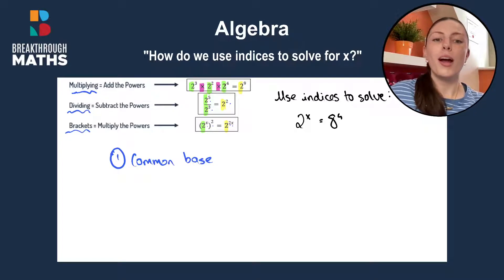Okay, on to our question. We're asked to use indices to solve 2 to the power of x is equal to 8 to the power of 4. First of all, we notice that we do not have a common base. We have 2 and we have 8, so we need to fix that if we want to use indices to solve here.